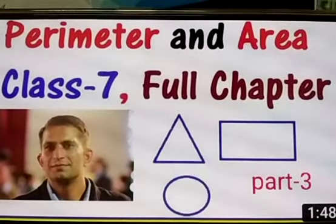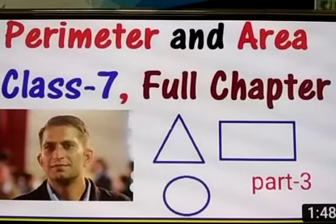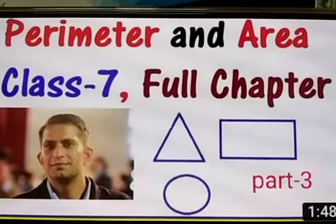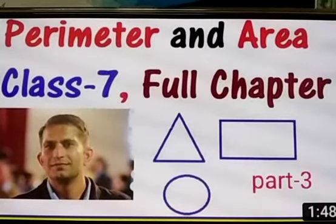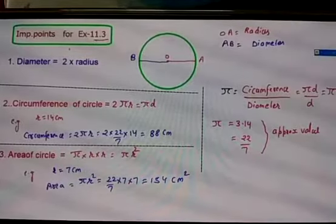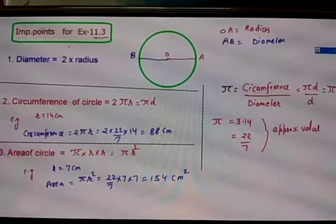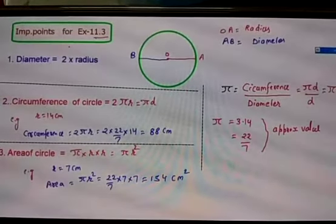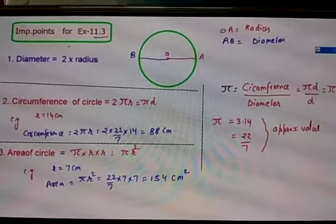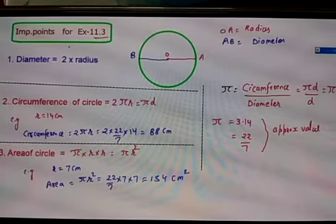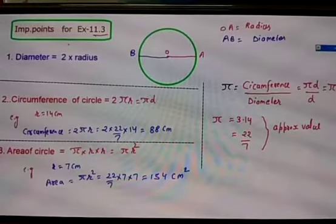For class 7, subject mathematics. Today we are going to start the next topic of perimeter and area. In the last classes we learnt about how to find the perimeter and area of a rectangle and a square.